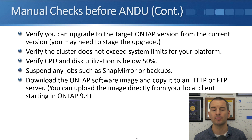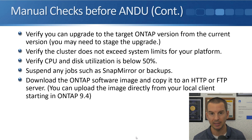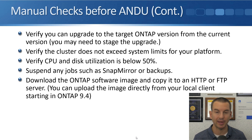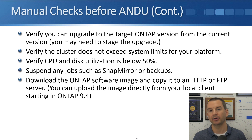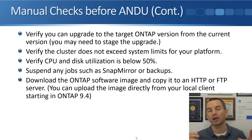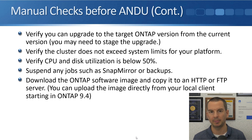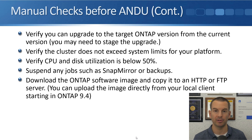Suspend any jobs such as SnapMirror or backups until after the upgrade is complete. Also download the ONTAP software image from the NetApp website and copy it to an HTTP or FTP server, from where it will be downloaded onto the actual storage system. Starting in ONTAP 9.4, you don't have to use an external HTTP or FTP server — you can download the software image to your laptop and copy it directly to the storage system from there.